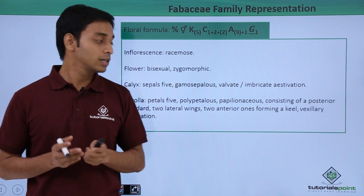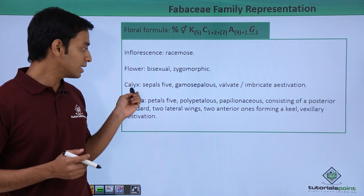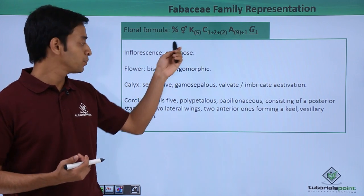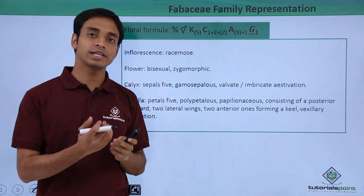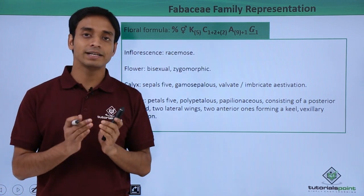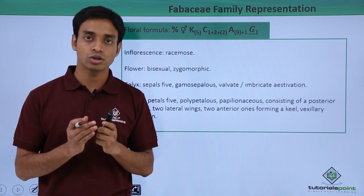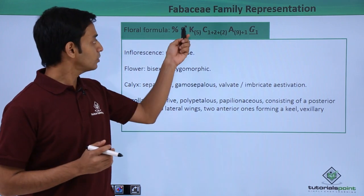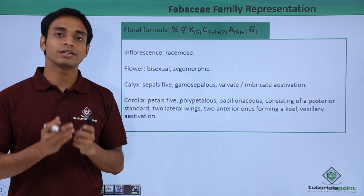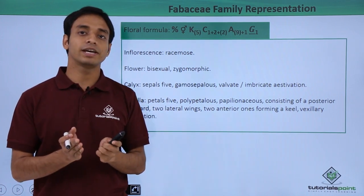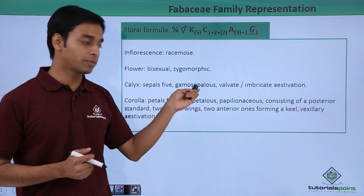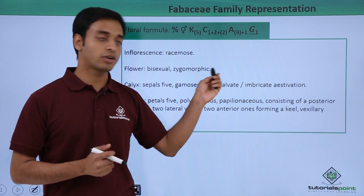Looking at the calyx, there are five sepals, represented by the number five as a subscript. When it is represented within a bracket, it means they are fused or united. So K with subscript five in brackets means the five sepals are in fused form — they are gamosepalous — and they follow imbricate or valvate aestivation.